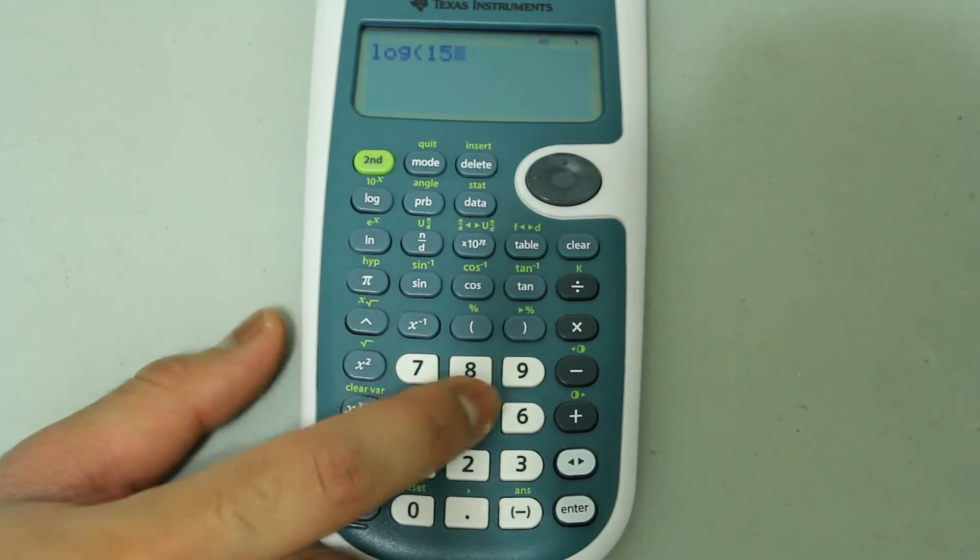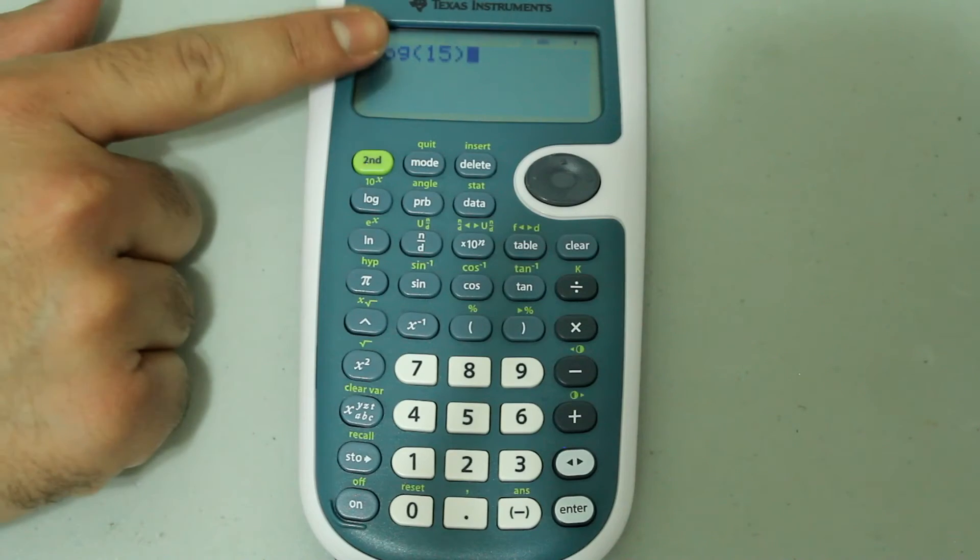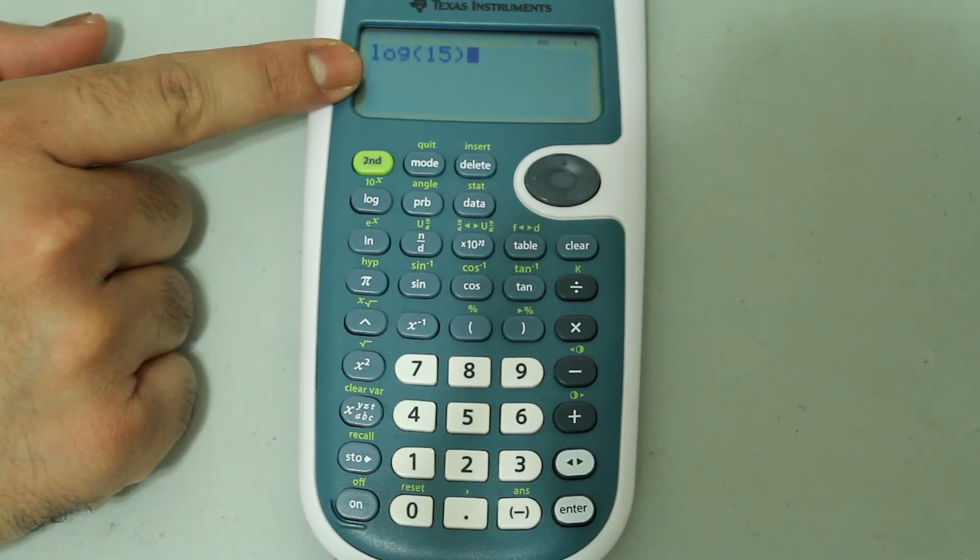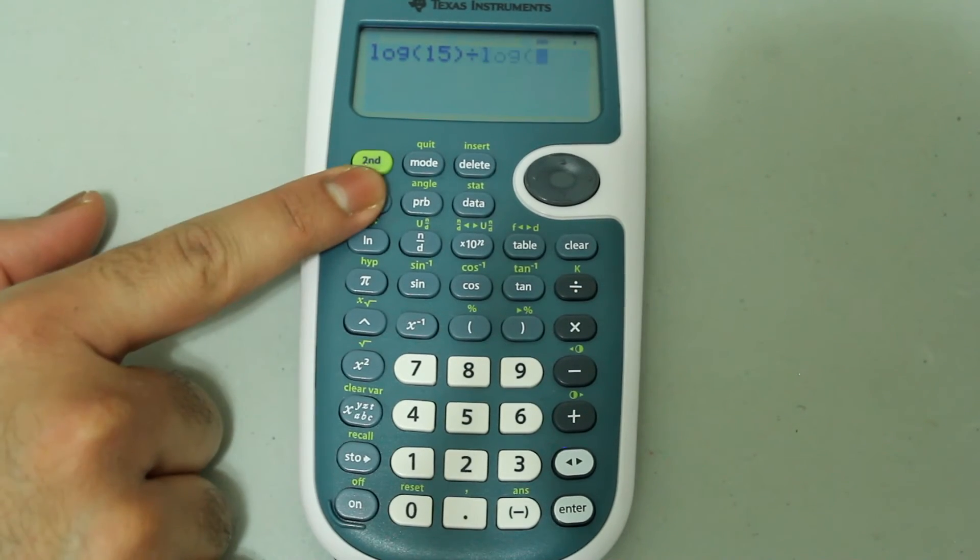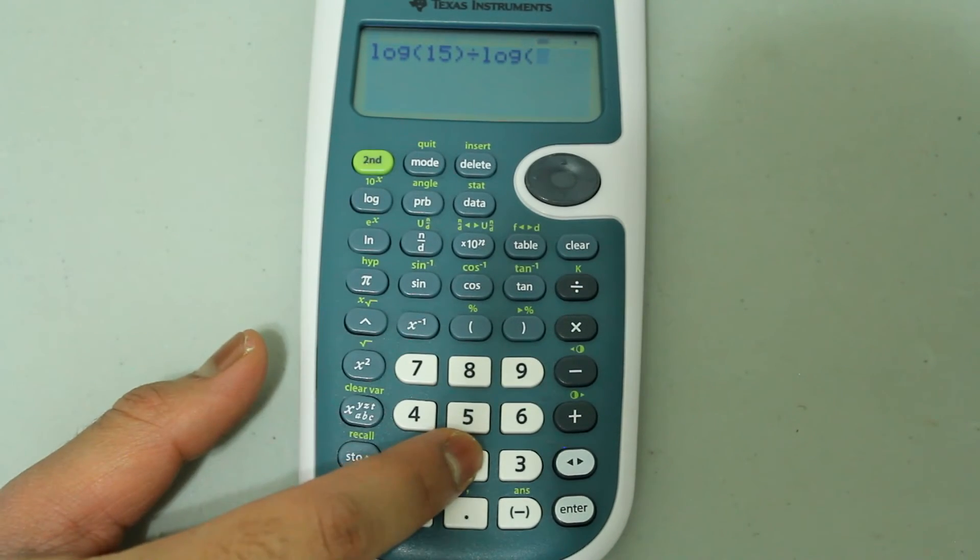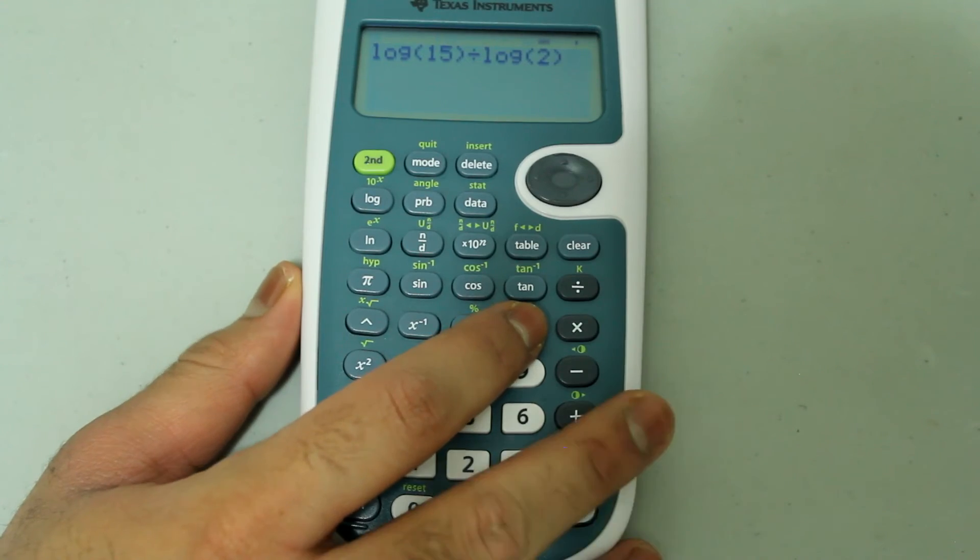Log 15. Just close the parentheses after you type in 15. This assumes that the log base is 10. Now divide that by log and then 2, and close the parentheses.